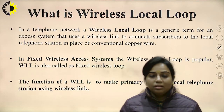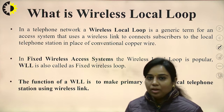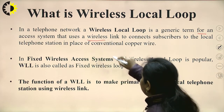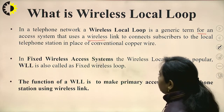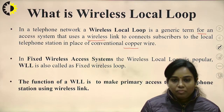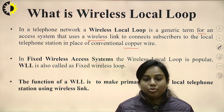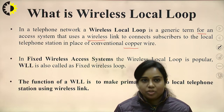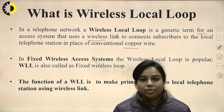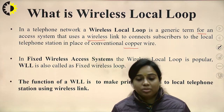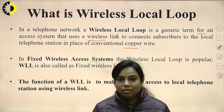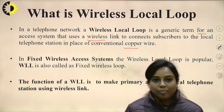What is WLL? In a telephone network, WLL is a generic term for an access system that uses a wireless link to connect a subscriber to the local telephone station in place of conventional copper wire. Earlier, landline phones were connected through twisted pair cable, but twisted pair cable has disadvantages like covering very less distance, so copper wires are used.